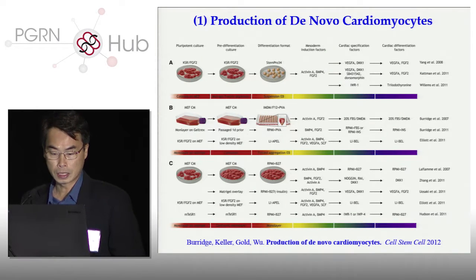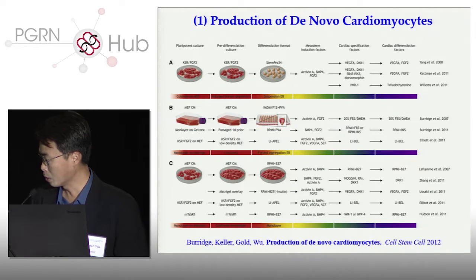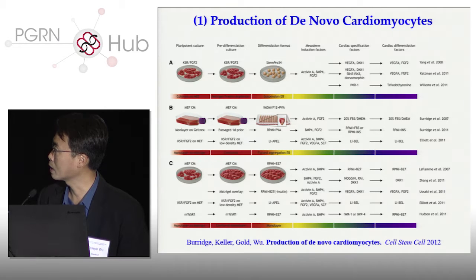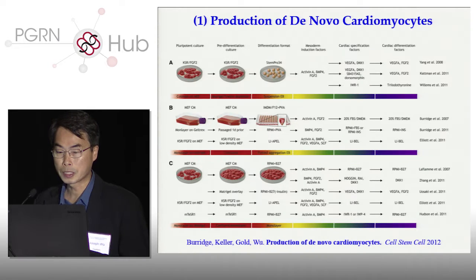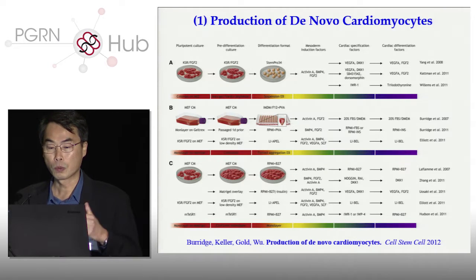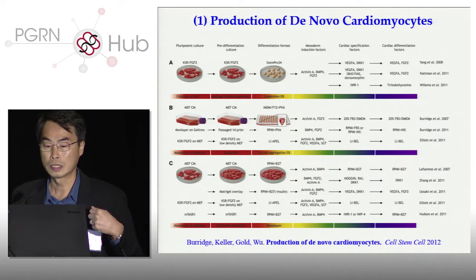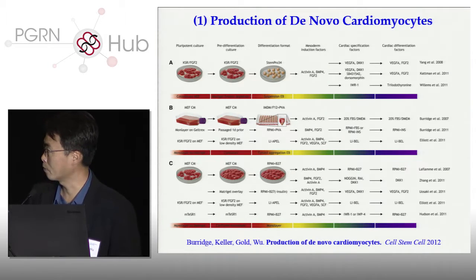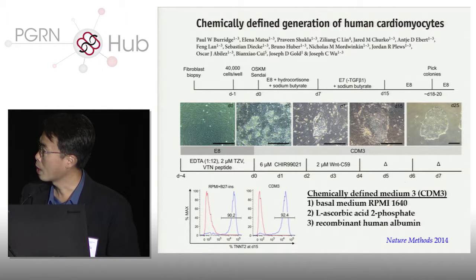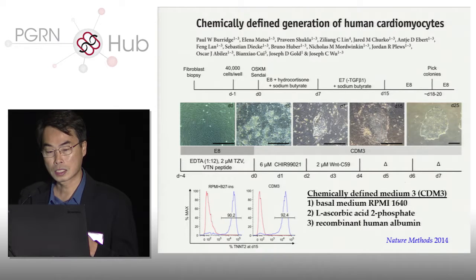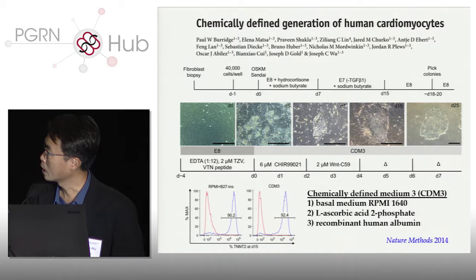We've been working on developing cardiomyocytes for the past ten years or so. Different methods exist for making these human ESC and human iPSC cardiomyocytes. Most of our lab is trying to figure out what kind of factors you need to add — what cardiac specificity factors and at what time point — to push them into cardiomyocytes. The other approach in the lab is trying to make these cardiomyocytes in a high-throughput and low-cost production method. This study was done by my previous postdoc Paul Burridge, who is now at Northwestern University.